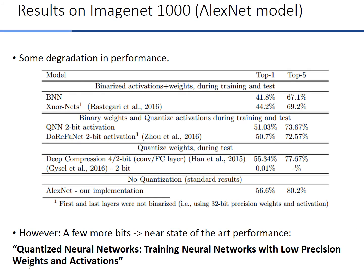On larger datasets such as ImageNet, we observed a degradation in performance. However, by using more than one bit we can achieve near state-of-the-art results. Full details can be found in our latest work titled 'Quantized Neural Networks: Training Neural Networks with Low Precision Weights and Activations,' which will be presented at the NIPS 2016 workshop.